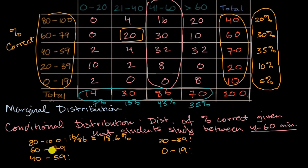We would figure out the percentage 60 to 79, that would be 30 out of 86, whatever percentage that is, and so on and so forth, in order to get that entire distribution.